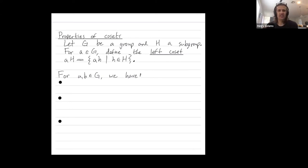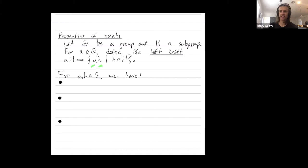Welcome. I want to describe some of the main properties of cosets. So g is a group and h is a subgroup. For an element little a in the group, we define the left coset aH as all things of the form a times little h, where little h is in our subgroup. This is the same definition you've seen in the prior videos — I just replaced little g with little a.